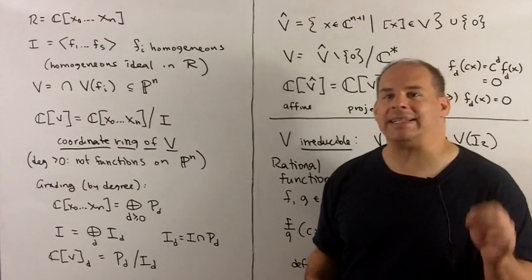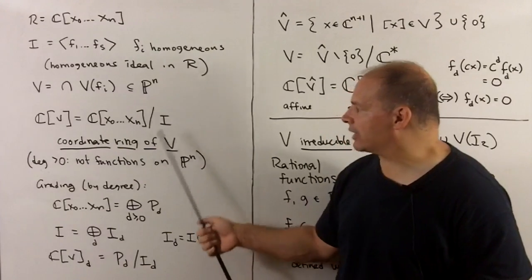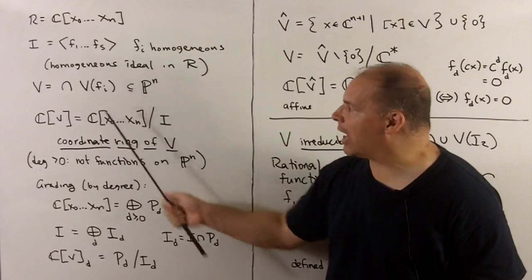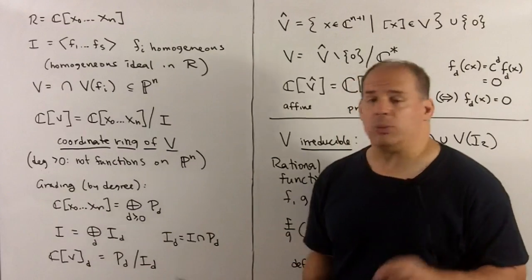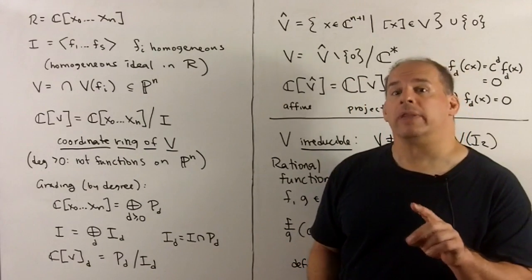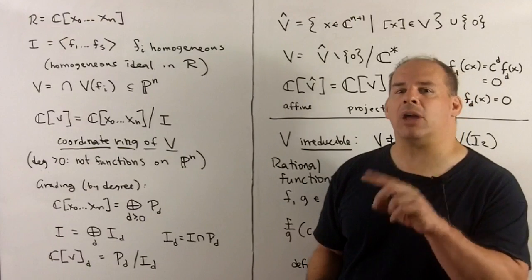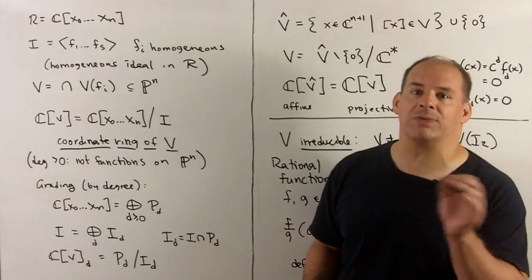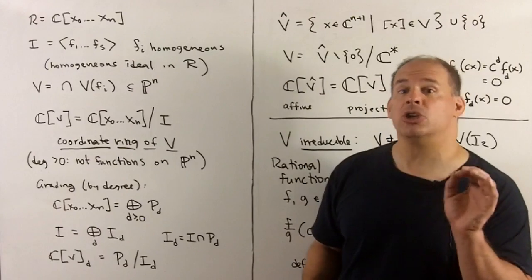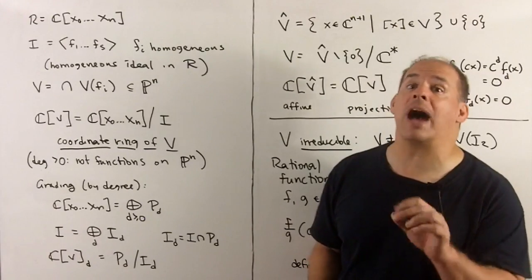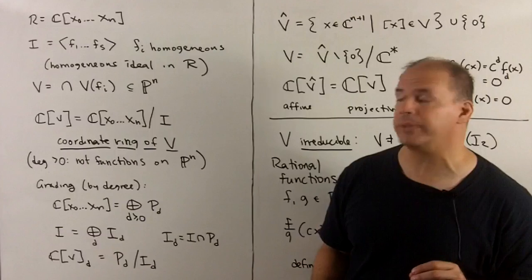Because we're talking about ideals, I could form the coordinate ring of a projective variety V — we just take the polynomial ring mod the ideal. We should note that polynomials in general can't be thought of as functions on projective space; they don't have the right transition property, or they're not well-defined on lines through the origin in general.